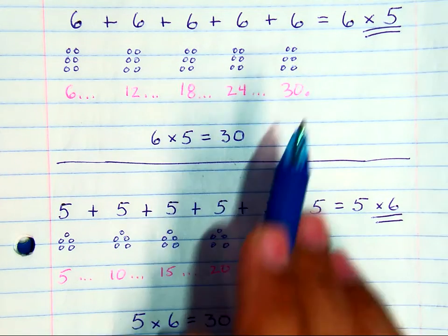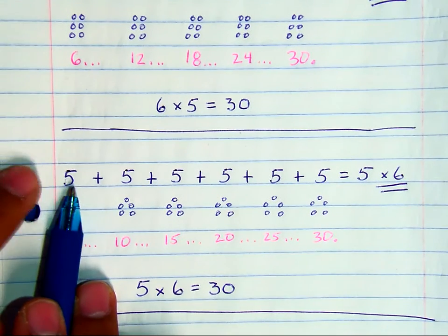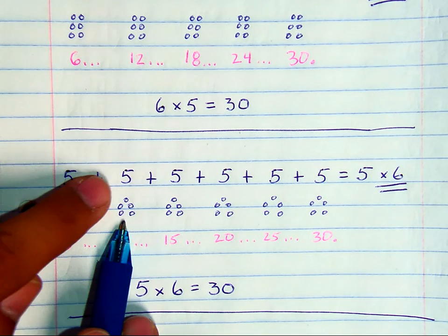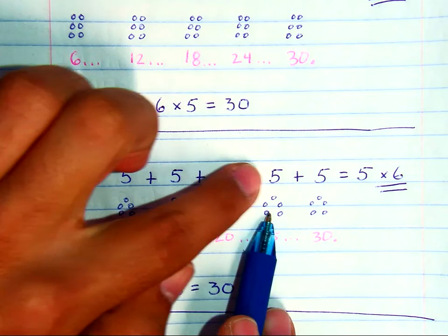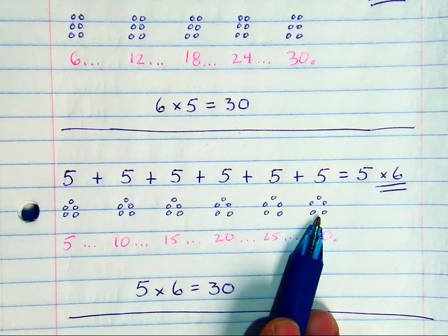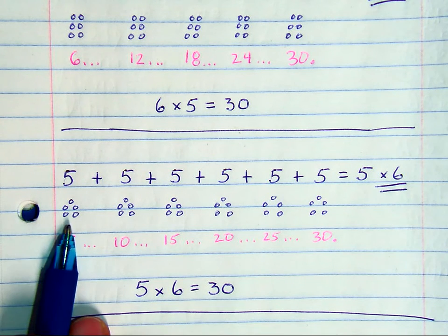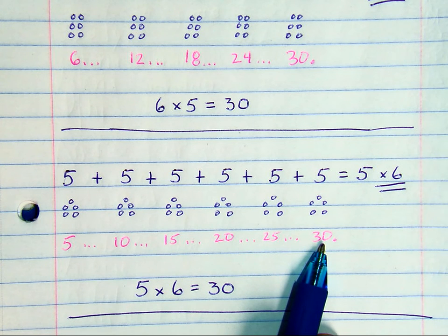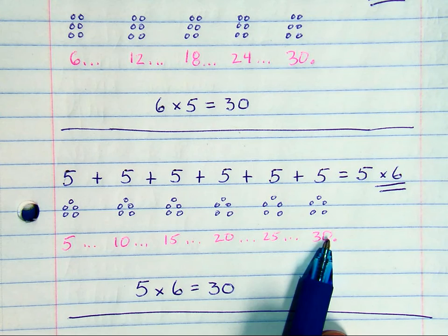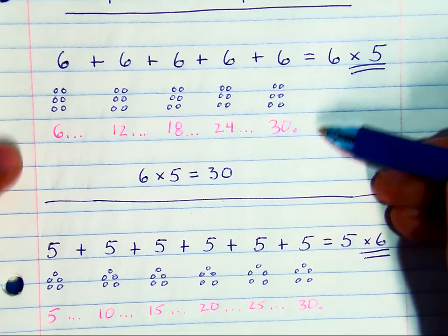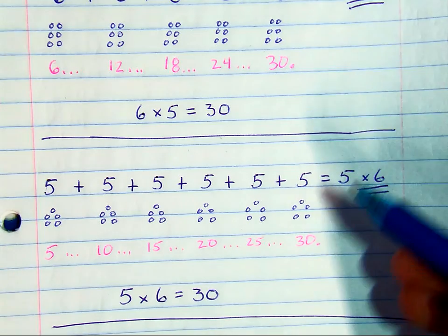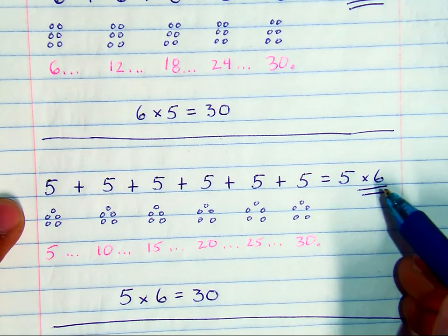Now, if you count by 5's and you have 1, 2, 3, 4, 5, 6 groups of 5, and you count that up — 5, 10, 15, 20, 25, 30 — you're going to get the same total as if you counted 6 five times. It's the same as 5 six times.